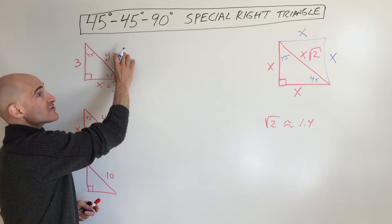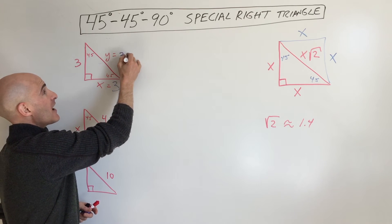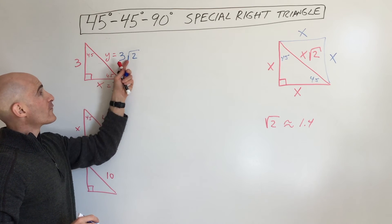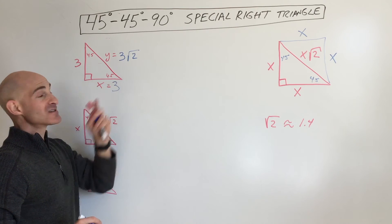But if we multiply by the square root of 2, now we find the hypotenuse: 3 square root of 2. So it's 1.4 times longer than one of these side lengths.